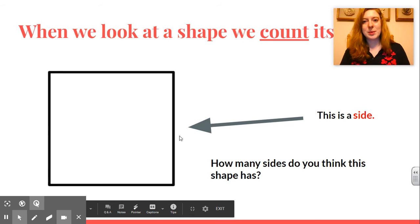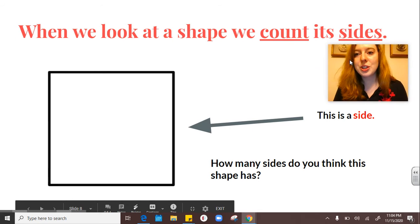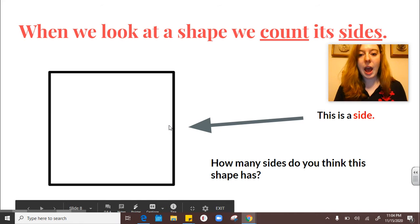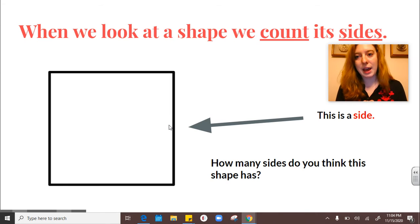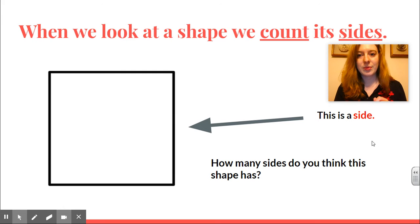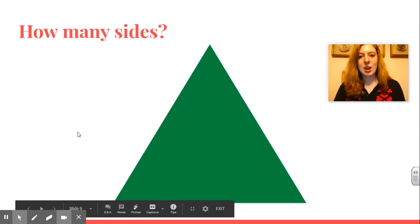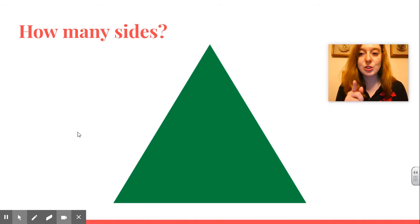Okay, let's look at our next one. So when we look at a shape, we count. Count is contar. It's sides. So this is a side. How many sides do you think this shape has? Oh, went too far. All right. What about here? How many sides? How many sides do you see here in this triangle?